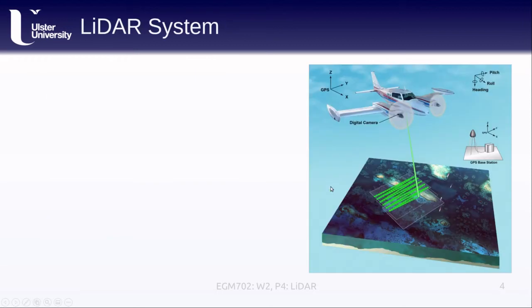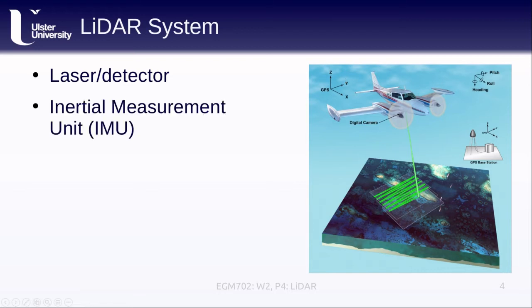So a LiDAR system normally looks something like this, where we have our platform, we have our sensor that is sending out our signals, and then we have a number of other components that make up the system. Obviously the laser and the detector is perhaps the most important of these, because this is how we actually send and receive the signals.